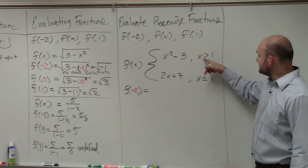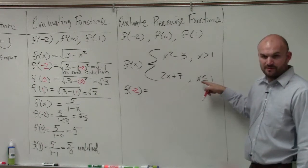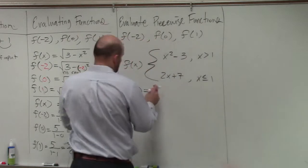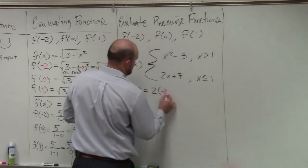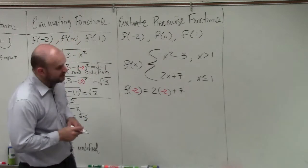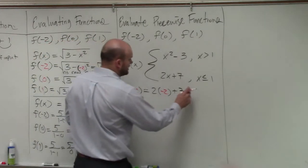So we go to negative 2. Is negative 2 greater than 1 or less than or equal to 1? Less than or equal. So that's the rule I use. So 2 times negative 2 is negative 4. Negative 4 plus 7 is going to equal 3.